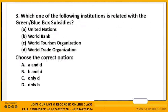Next question: Which institution is related to green box and blue box subsidies? The options are United Nations, World Bank, World Tourism Organization, and World Trade Organization. Under the WTO, agricultural subsidies are categorized as green, blue, and amber box subsidies.